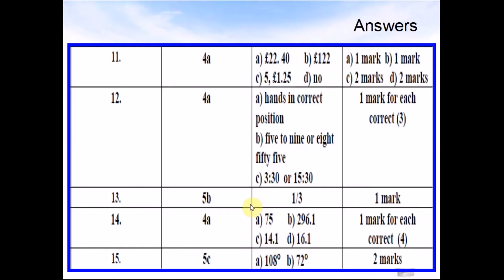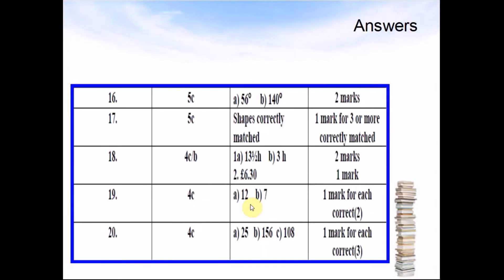Question 15: A was 108 degrees. B was 72 degrees. Question 16: A was 56 degrees. B was 140 degrees.